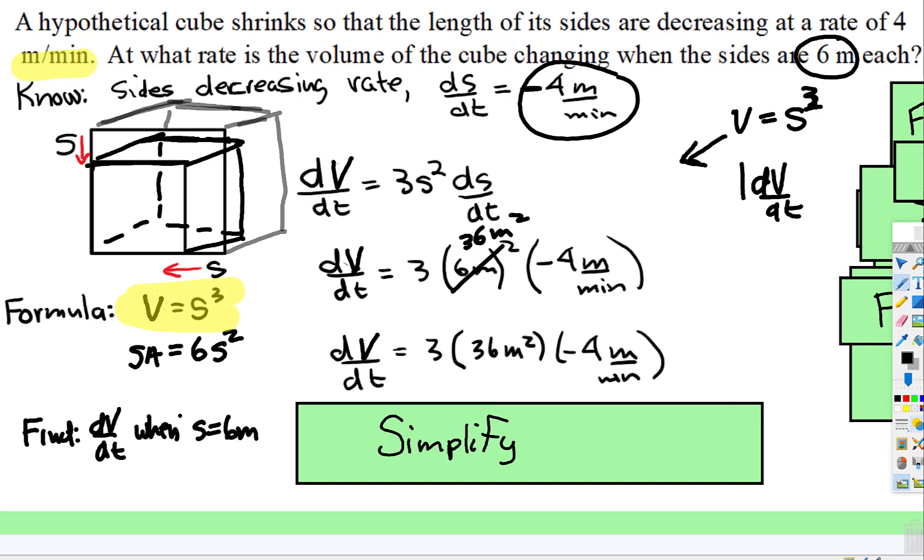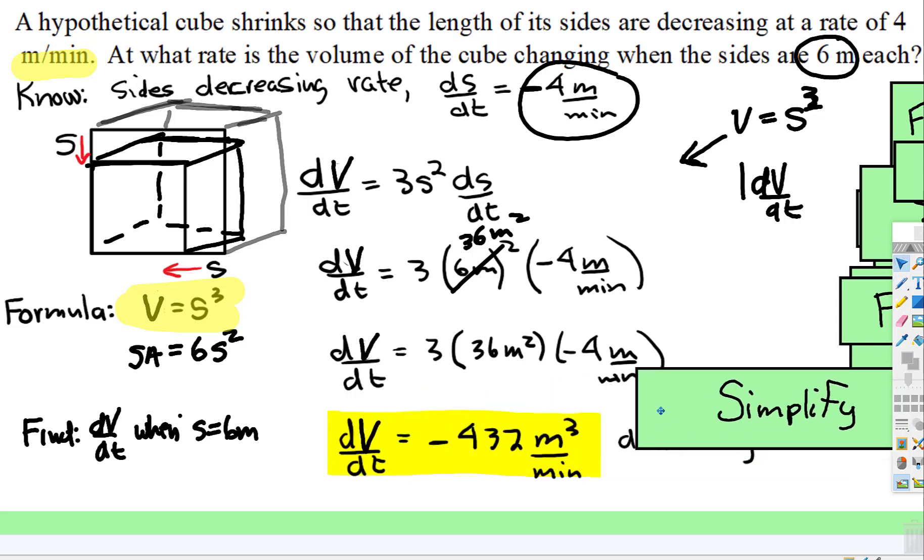You're going to rewrite it just like that. And then you're going to simplify by multiplying. And we have the rate that the volume is decreasing. It's decreasing at negative 432 meters cubed per minute.